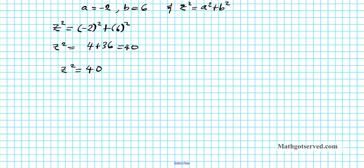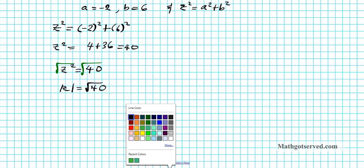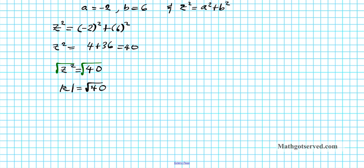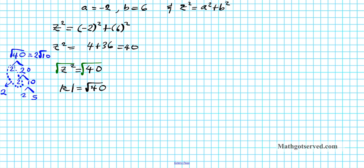To isolate z, take the square root of both sides: the absolute value of z equals the square root of 40. Let's simplify: the prime factorization of 40 is 2 times 2 times 2 times 5. The two 2's form a pair and come out as 2, while the remaining 2 and 5 stay inside. So root 40 equals 2 root 10. The absolute value of z is 2 root 10.